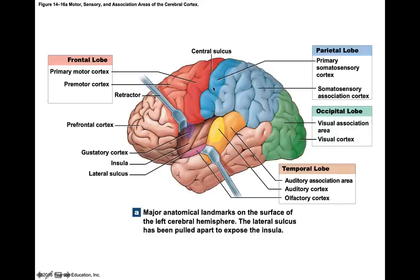Right behind the central sulcus is the postcentral gyrus, functionally called the primary somatosensory cortex. This cortex receives sensations of touch, pressure, pain, vibration, and temperature coming from the thalamus, making you consciously aware of these sensations. Special sensations like sight, sound, smell, and taste are received at other special areas in the cortex.